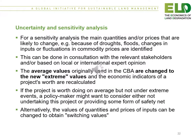For a sensitivity analysis, the main quantities and prices that are likely to change — for example because of droughts, floods, changes in inputs, or fluctuation in commodity prices — need to be identified. This can be done in consultation with relevant stakeholders and based on local or international expert opinion. The average values originally used in the cost-benefit analysis are changed to new extreme values and the economic indicators of a project's worth are then recalculated. If the project is worth doing on average but not under extreme events, the policy maker might want to consider either not undertaking the project or providing some form of safety net.